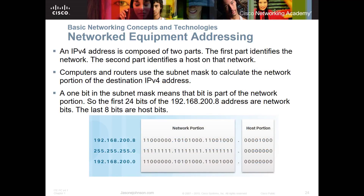A v4 address is composed of two parts: the first part identifies the network, and the second part identifies a host on the network. I've got videos on subnetting in the description to help you figure out subnets. A computer or router uses the subnet mask to calculate the network portion of the destination IPv4 address. When a network device starts reading the packet of information, it reads the IP address — ones and zeros.